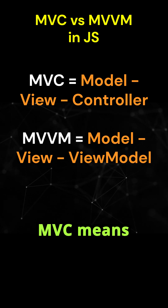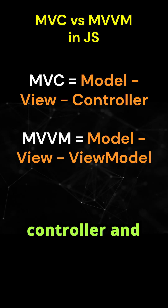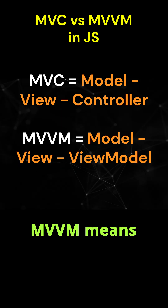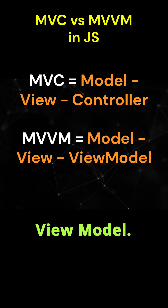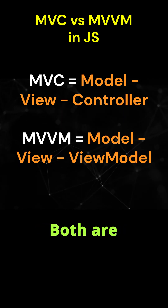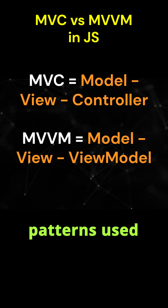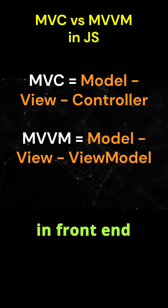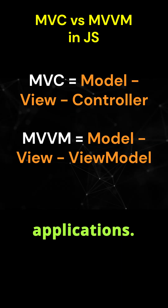MVC means Model, View, Controller. And MVVM means Model, View, ViewModel. Both are architectural patterns used to separate concerns and organize code in front-end or full-stack applications.